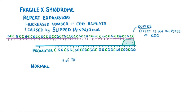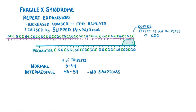The normal number of CGG repeats is 5 to 44. Alleles with 45 to 54 CGG repeats are called intermediate expansion alleles, and they don't cause any symptoms. Alleles with 55 to 200 CGG repeats are called pre-mutation alleles, and they can cause some mild symptoms.